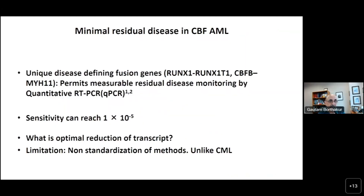For core binding factor AML, the advantage is unique disease-defining fusion genes — RUNX1-RUNX1T1 and CBFβ-MYH11 — which permit measurable residual disease monitoring by quantitative RT-PCR, with sensitivity reaching up to 10⁻⁵ to 10⁻⁶, much higher than flow cytometry. The question is what is the optimal reduction of transcript. A limitation is that unlike CML, where there is an international standard, there is no full standardization of methods across large institutes and groups.